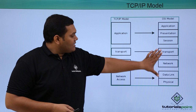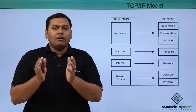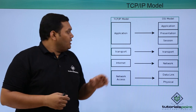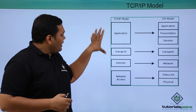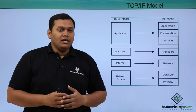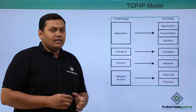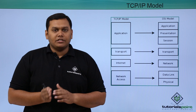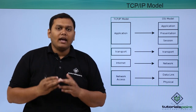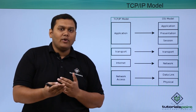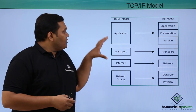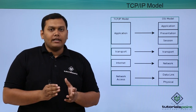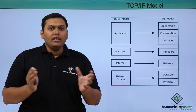All seven layers of the OSI model are combined and segregated into four layers in the TCP/IP model. It is a very robust architecture where each and every protocol works very effectively. It has more advantages than disadvantages, and when you add more machines into the network, it works very well.